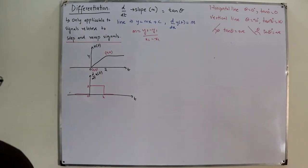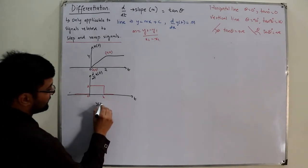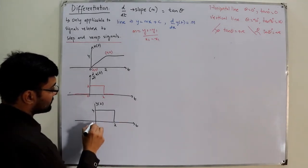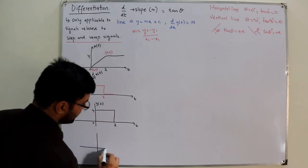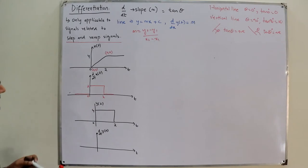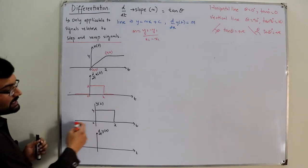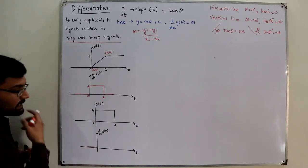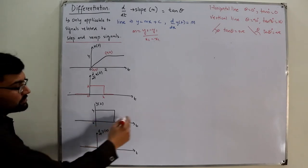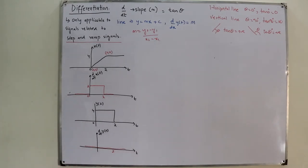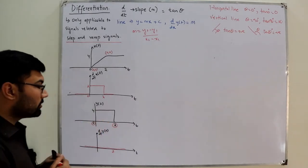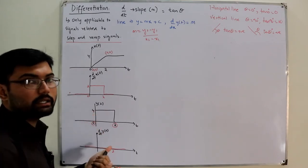Now consider y(t), a constant function equal to 4 from 0 to 2, and 0 elsewhere. If asked for its derivative: the constant value 0 before 0 gives derivative 0; from 0 to 2 it's constant at 4 so derivative is 0; after 2 it's 0 again. But we have discontinuities — a jump at 0 from 0 to 4, and at 2 from 4 to 0.